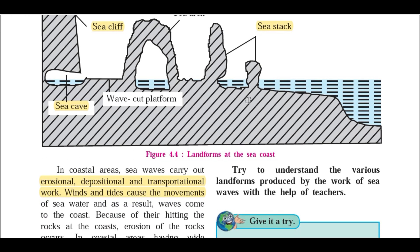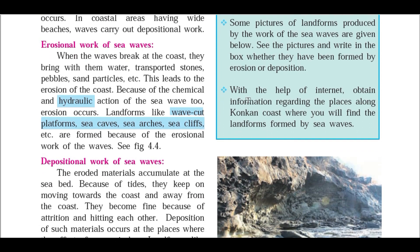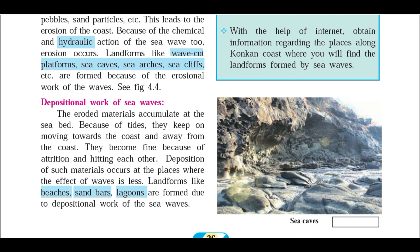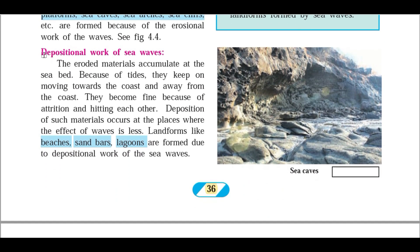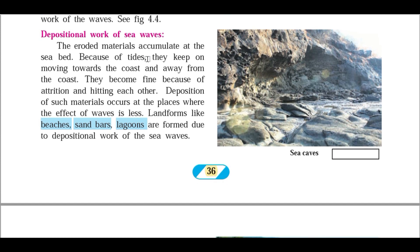Now let's see the depositional work of sea waves. The eroded material accumulates at the seabed. Because of tides, it keeps moving toward the coast and away from the coast. The material becomes fine because of attrition and hitting each other, and deposition of such material occurs at places where the effect of sea waves is less.